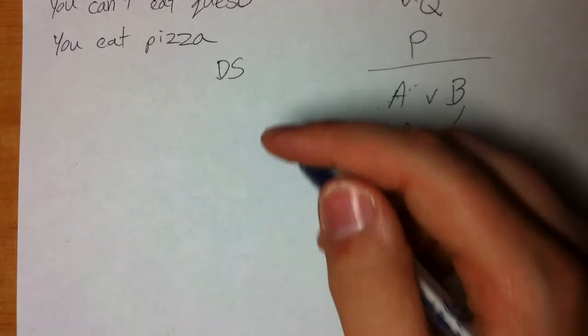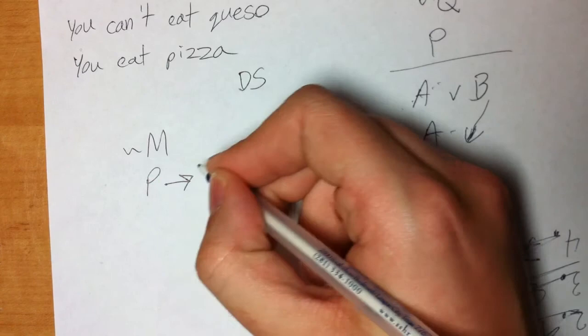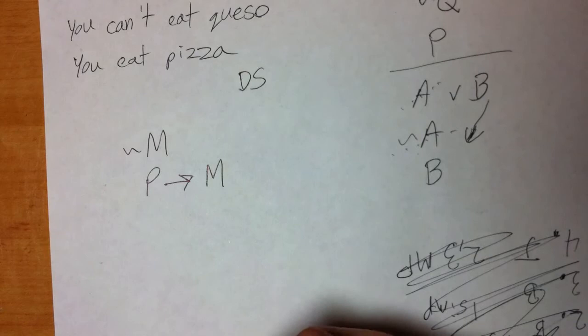On this example: what if we had tilde M and some disjunction — can you recognize that pattern? That would be tilde P — modus tollens. That's basically an overview of the four rules. We're going to talk about the practice problems in a little bit, and we'll talk about the other four rules first.